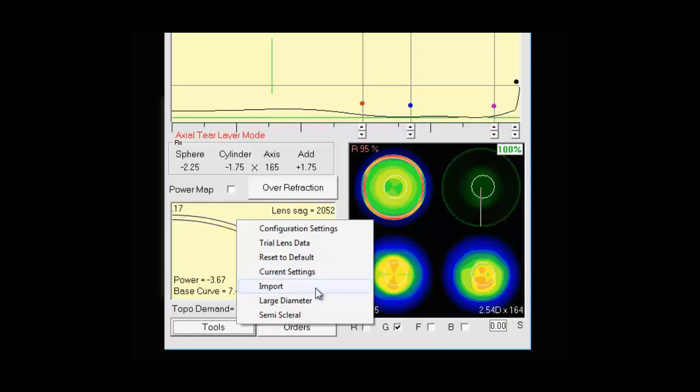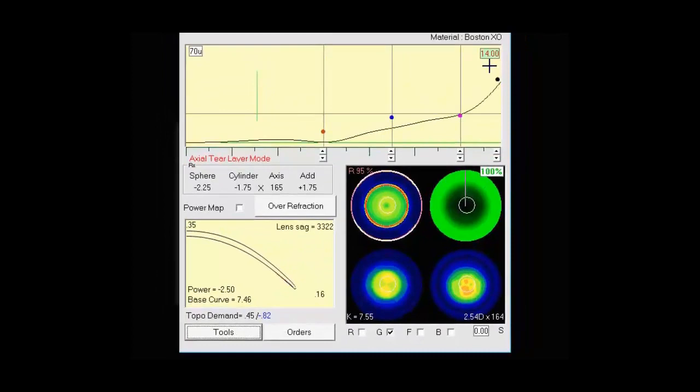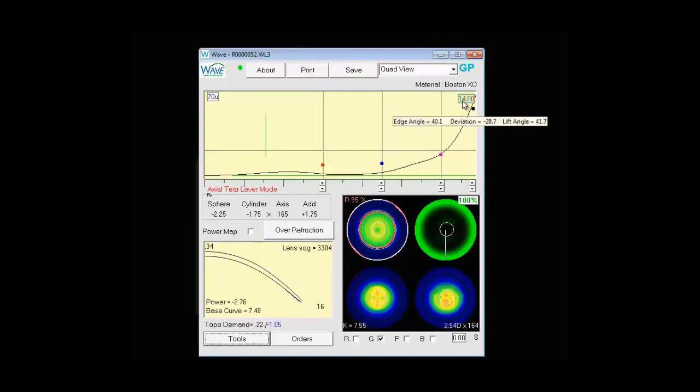Import will allow you to import a design. And then we have large diameter and semi-scleral lenses. Large diameter is going to default to a corneal scleral type design. So if I select that now you'll see it will change the diameter to 14-0. It will align centrally and give a little more edge lift to get over the limbus. You'll notice as we get to a large diameter lens we have a little red indicator here. And if we hover over the diameter we have edge angles, deviation, and lift angle.